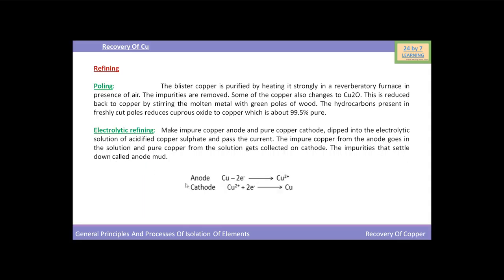In this reaction, at the anode, copper oxidizes to form copper ion. At the cathode, copper ion reduces to copper and gets deposited on the cathode. So by this way, pure copper is obtained. So students, this is all about recovery of copper. Thank you.